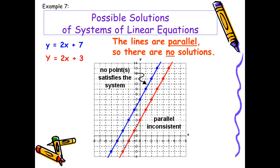In example 7, graphing y equals 2x plus 7 — y-intercept of 7, slope of 2, rise 2 run 1 — generates this blue line. My second equation is y equals 2x plus 3: y-intercept of 3 with the same slope of rise 2, run 1. What happens is I get two parallel lines, so there are no solutions because parallel lines never intersect. You might notice even from the equations that the slopes were the same — when slopes are the same, you will always get parallel lines, and I could have predicted there would be no solution even before graphing.